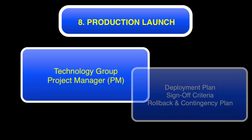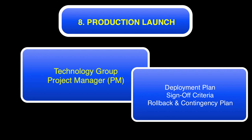The last piece is production launch. The technology group project manager is in charge. They have to create a full deployment plan, including staging and sequencing of the individual system rollouts involved in the project. They have to define sign-off criteria for a successful launch. And if the launch isn't successful, what's the rollback plan and contingency plan in the event the launch is unsuccessful?